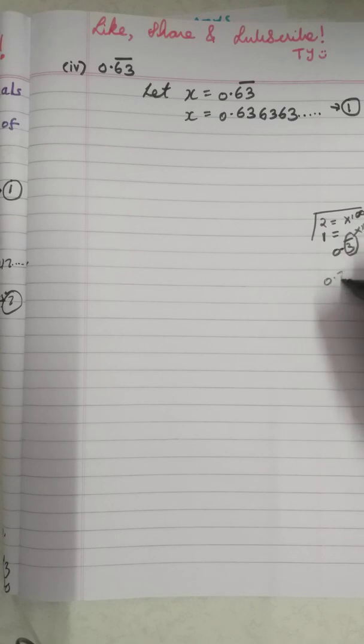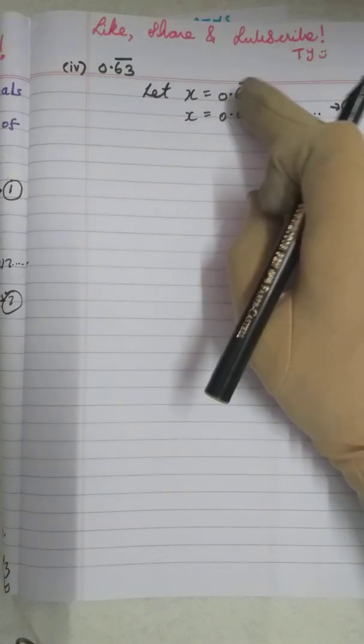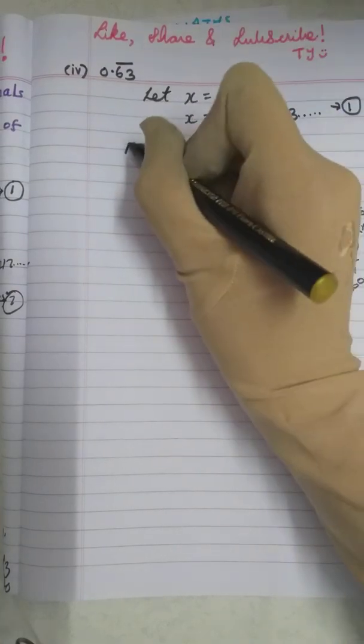Suppose you have 0.749̄, what is the periodicity? 3 because here the bar is there on 3 digits. So in that case, multiply it with 1000. But here, the bar is there on 2 digits. So multiply it with 100.